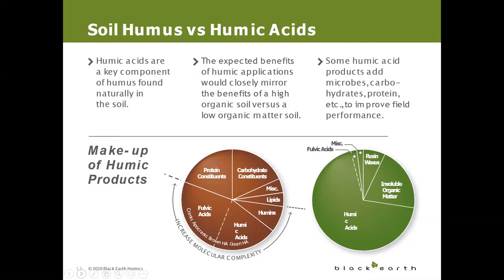They will out-produce soil low in humus every time. Humic acids are a key component of humus, so the benefits of applying humics to a low-content soil would be to mirror the benefits of having a soil that's rich with humus.